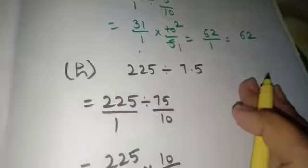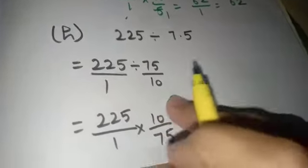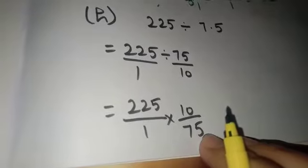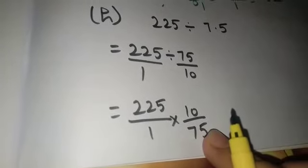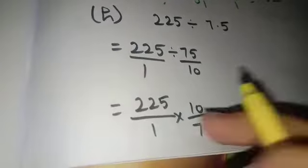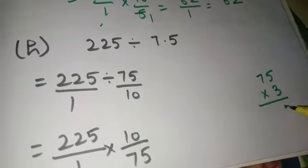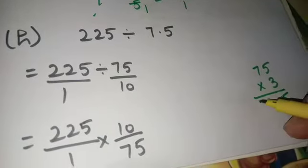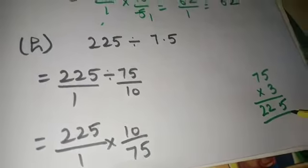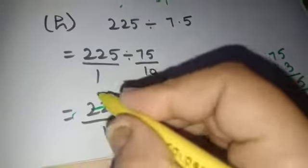Move to the H part. 225 divides 7.5. Decimal has been removed, now it's in this form. Try to cancel. 75 multiply 3 is 225. It means at the table of 75 it will go 3 times.